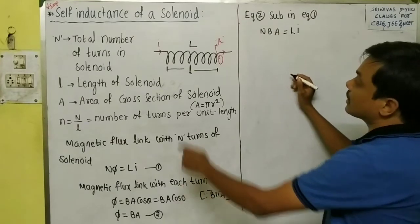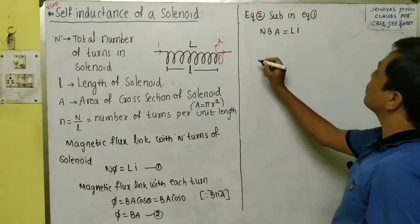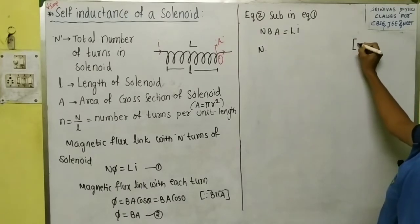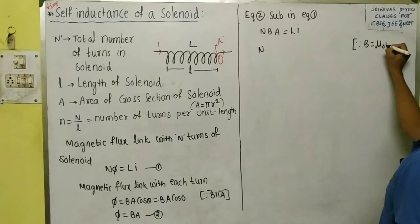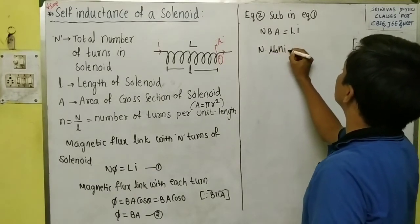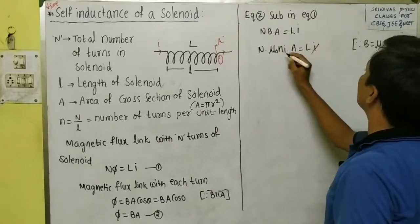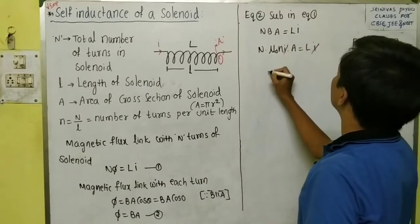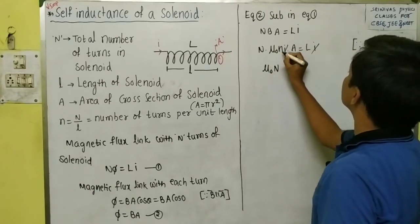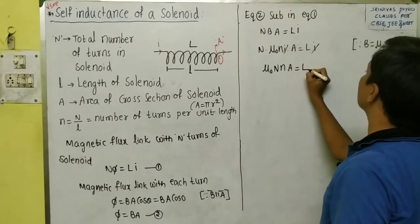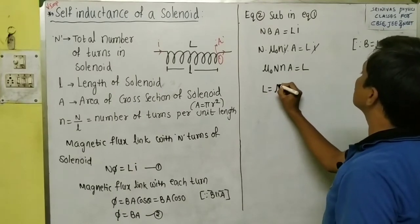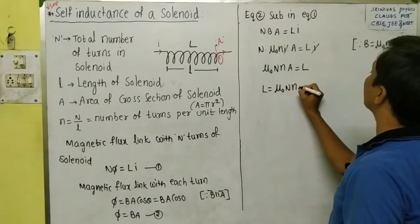Now, what is B? It is the magnetic induction on the axis of the solenoid. We know the formula: B = μ₀·n·I. Substituting this in, we get N·μ₀·n·I·A = L·I. The I on both sides cancels, leaving L = μ₀·N·n·A, where capital N is the total number of turns and small n is the number of turns per unit length.